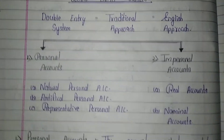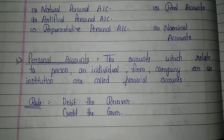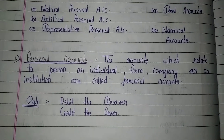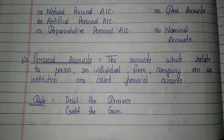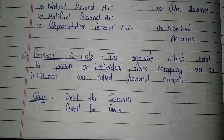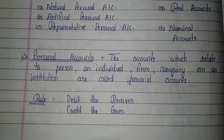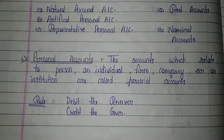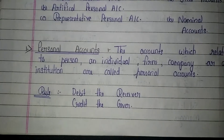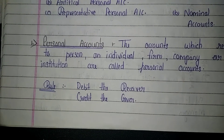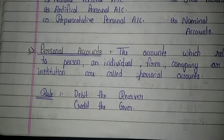The personal account is defined as the accounts which relate to a person, an individual, a firm, a company, or an institution. The rule for personal accounts is: debit the receiver and credit the giver — meaning whoever is the receiver we debit, and whoever is the giver we credit.